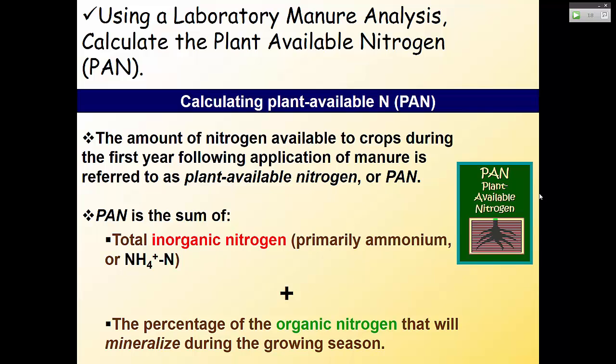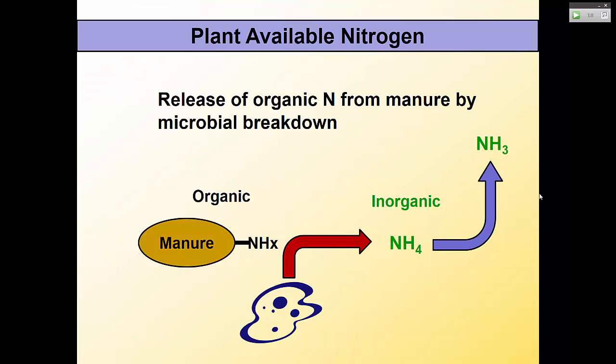Plant-available nitrogen — how much nitrogen is going to be plant-available? Basically, you sum the inorganic nitrogen — ammonium and nitrate — from the manure test, since that's immediately available. Then you take the percent of organic nitrogen that will be available that year. PAN stands for plant-available nitrogen — you take the two concepts, inorganic and organic fractions, and add them together to figure out how much is going to be available this year.